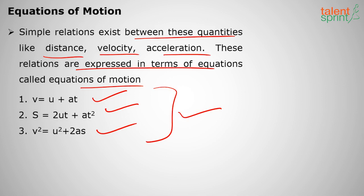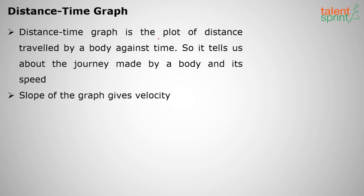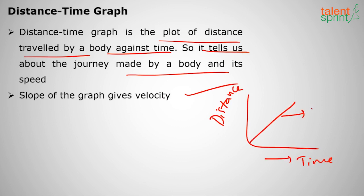Moving on to the distance-time graph: since distance = speed × time, the slope of a distance-time graph gives speed or velocity. The distance-time graph is a plot of distance traveled by a body against time; it tells us the journey made by a body and its speed. When distance is plotted on the y-axis and time on the x-axis, the slope gives velocity or speed.